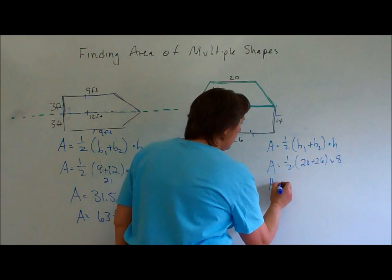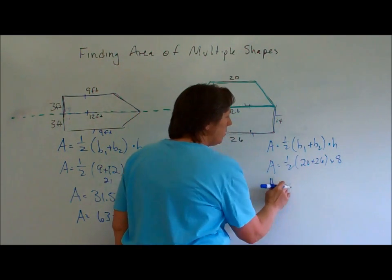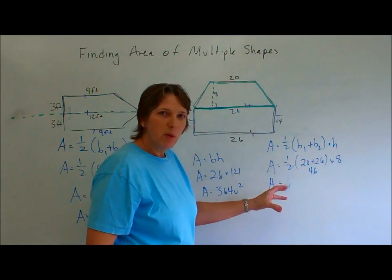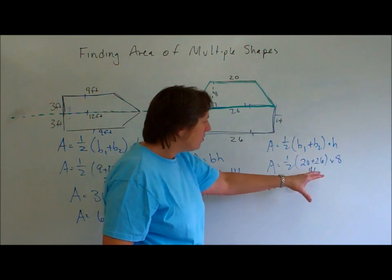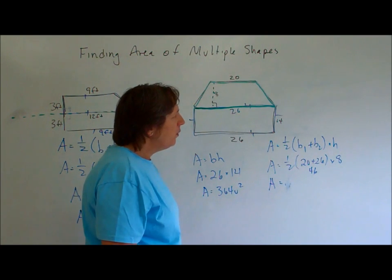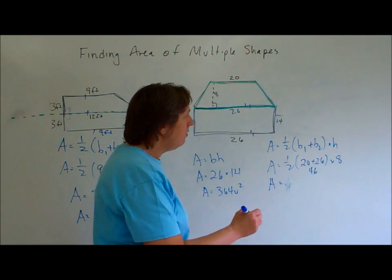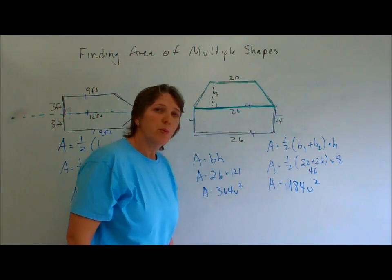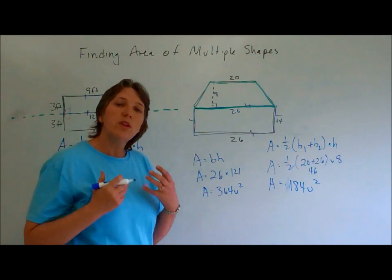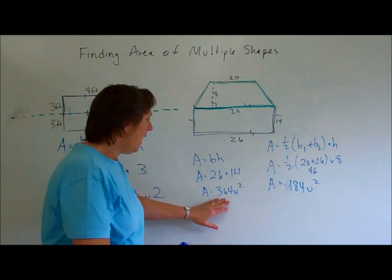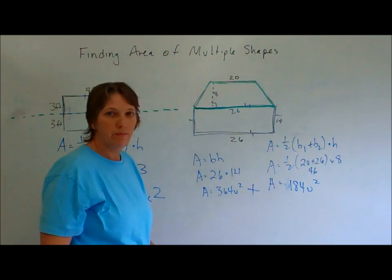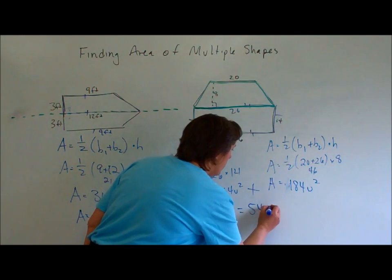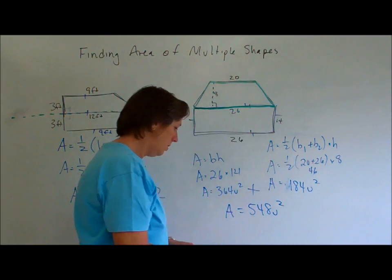When we work this, we're going to get a equals, well, we have 46, and we're going to say, okay, in the calculator, I'm going to plug in and put .5 times 46 times 8, and we get 184 units squared. All right, but what do we want to know? We want to know the total area. So we take and we add these two, and the total area is equal to 548 units squared.